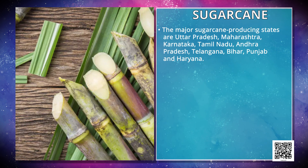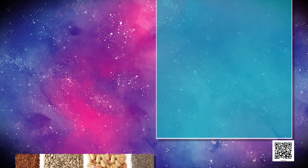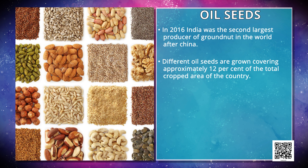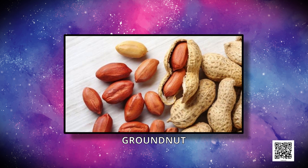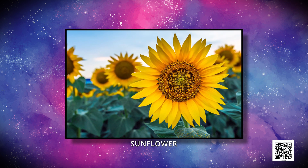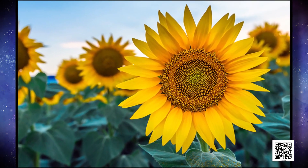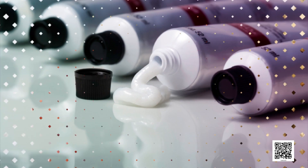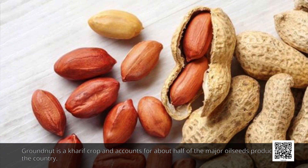The major sugarcane-producing states are Uttar Pradesh, Maharashtra, Karnataka, Tamil Nadu, Andhra Pradesh, Telangana, Bihar, Punjab and Haryana. Now we talk about oilseeds. In 2016, India was the second largest producer of groundnut in the world after China. Different oilseeds are grown covering approximately 12% of the total cropped area of the country. Main oilseeds produced in India are groundnut, mustard, coconut, sesame, soyabean, castor seeds, cotton seeds, linseed and sunflower. Most of these are edible and used as cooking mediums; however, some are also used as raw material in the production of soap, cosmetics and ointments. Groundnut is a Kharif crop and accounts for about half of the major oilseeds produced in the country.